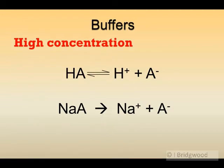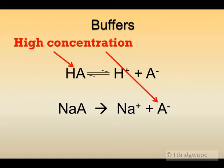This means we have high concentrations of the weak acid HA in its molecular form and a high concentration of A-, the conjugate base. So it's a solution containing a high concentration of the acid and a high concentration of the base — giving us the potential to react with hydrogen ions, the conjugate base reacting with hydrogen ions, or hydroxide ions, the weak acid reacting with hydroxide ions.